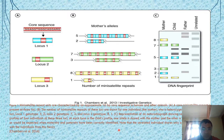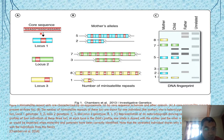Here you can see a figure taken from Chambers et al. 2013. This is a 16 base pair core sequence of human minisatellites. You will see there are three loci with repeated sequences — locus one, locus two, and locus three — each containing repeated sequences within this core sequence.